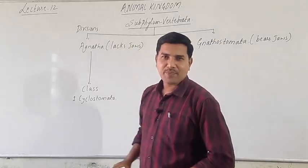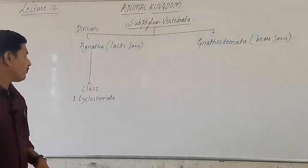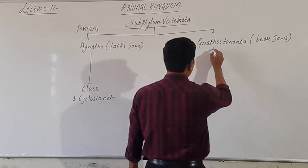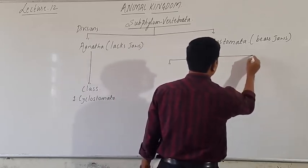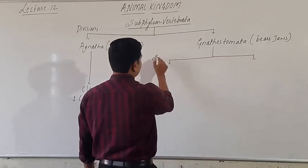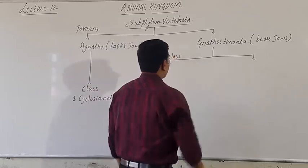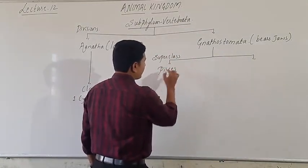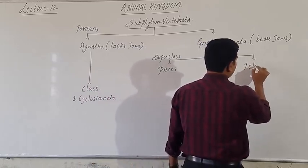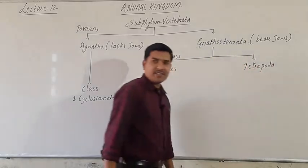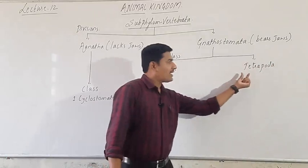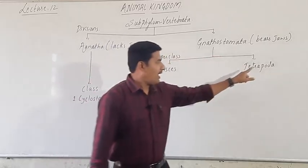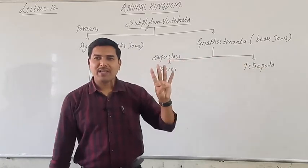Division Agnatha has one class called Cyclostomata. Similarly, Gnathostomata is divided into two super classes. The first super class is Pisces and the second super class is Tetrapoda. Pisces means fishes. Tetrapoda — tetra means four, poda means appendages or legs — so animals having four legs.